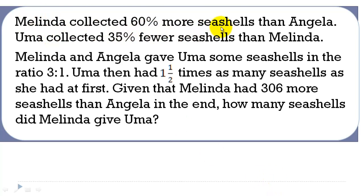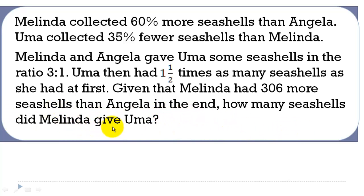Melinda collected 60% more seashells than Angela. Uma collected 35% fewer seashells than Melinda. Melinda and Angela gave Uma some seashells in the ratio 3 to 1. Uma then had one and a half times as many seashells as she had at first. Given that Melinda had 306 more seashells than Angela in the end, how many seashells did Melinda give Uma?